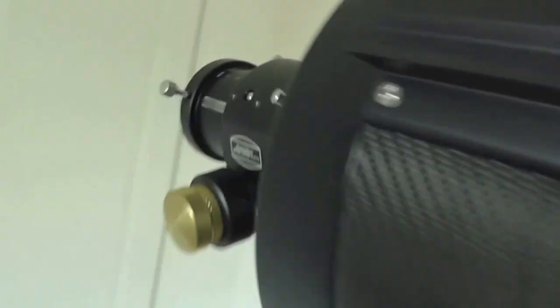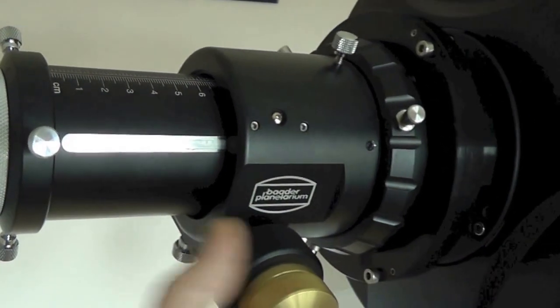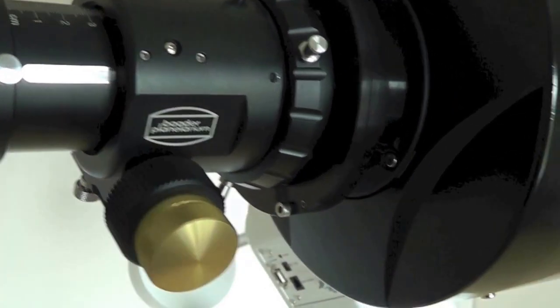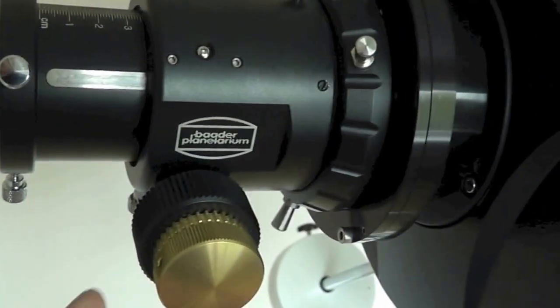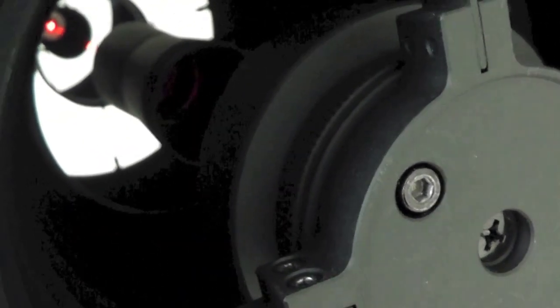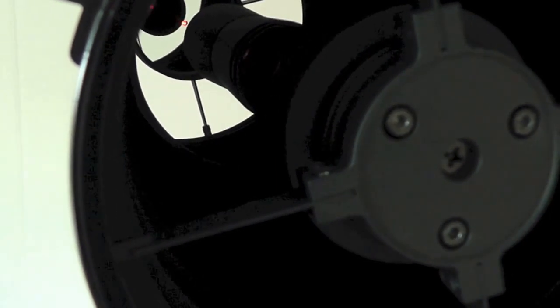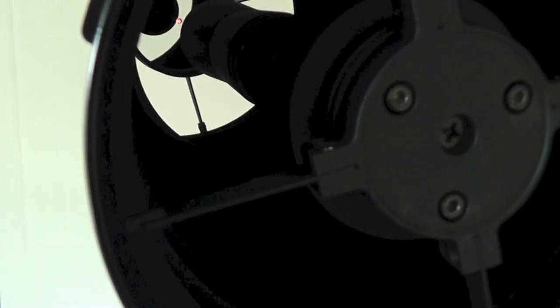Also, we want to ensure that when we rack the focuser out or in, we still remain on that center spot. Now you may find that it does move a fraction, a tiny bit from the dead center when you rack that focus area in and out. To be honest with you, I won't worry about that too much as long as it stays as far inside that center spot as possible.